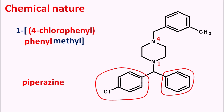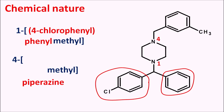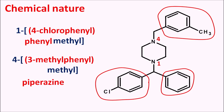At the fourth position, another methyl group is present — written as 4-methyl. This methyl group is attached with a substituted phenyl ring, specifically 3-methylphenyl. That gives the complete name of Meclizine. So Meclizine is a methylpiperazine derivative.